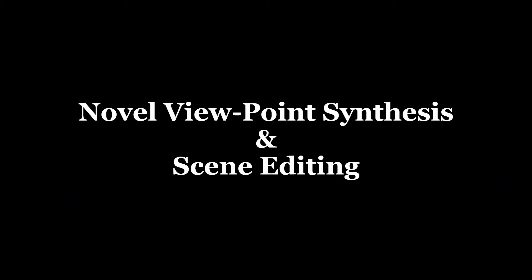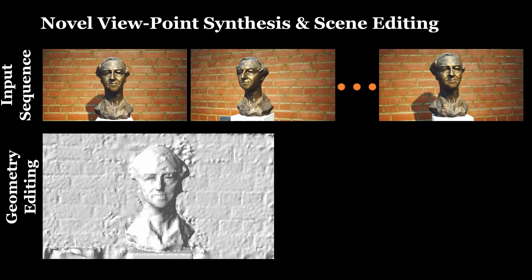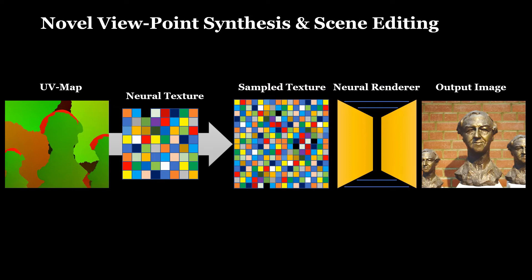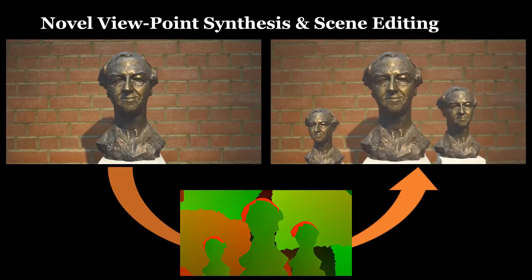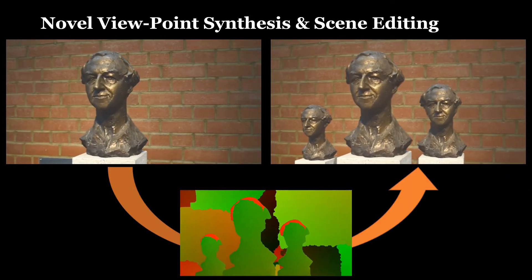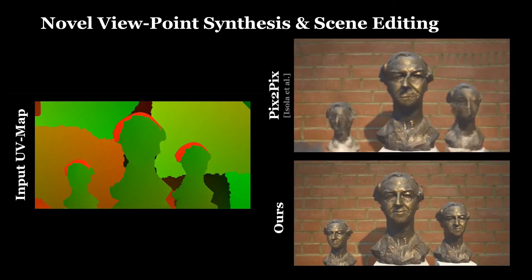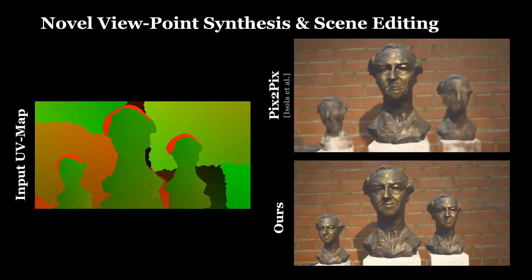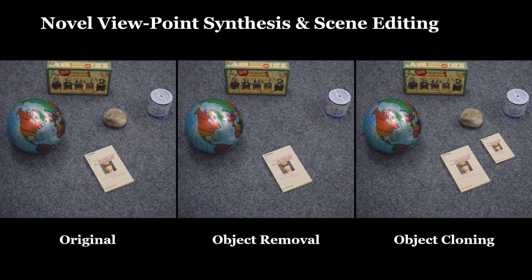Since the neural textures are attached to the object's surface, we are able to edit a scene. Given the input sequence and the 3D reconstruction, we can easily duplicate objects in a scene. Using this modified geometry, we rasterize the corresponding UV map, which is an input to our rendering pipeline. Here we show an example of scene editing.